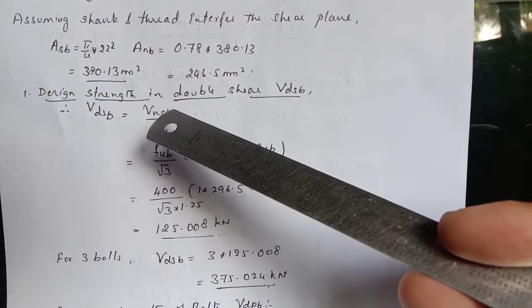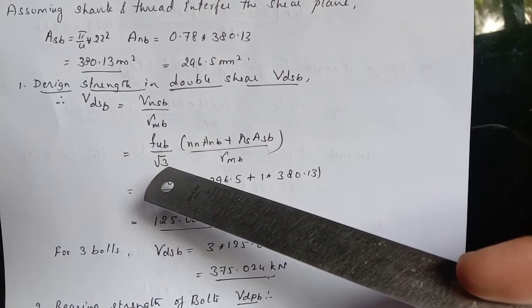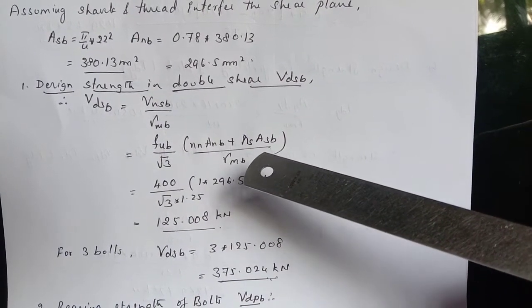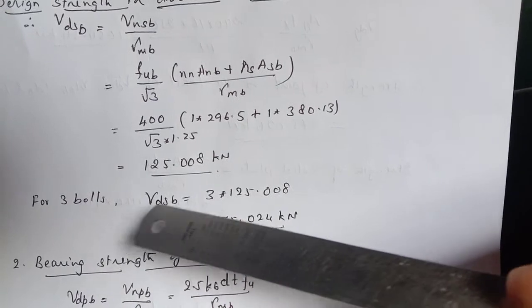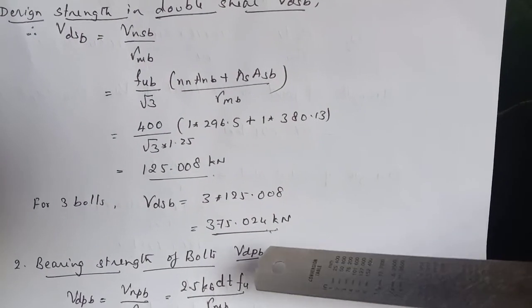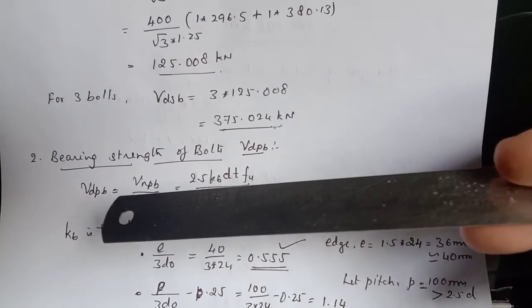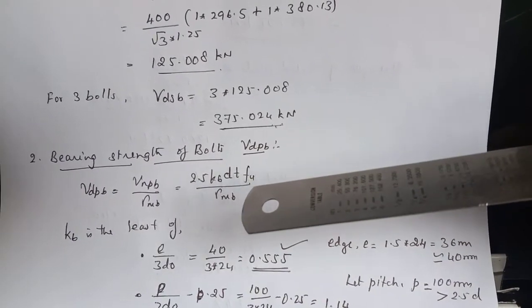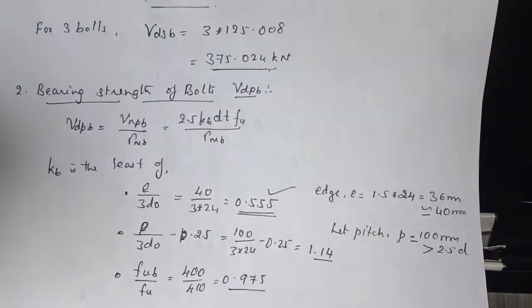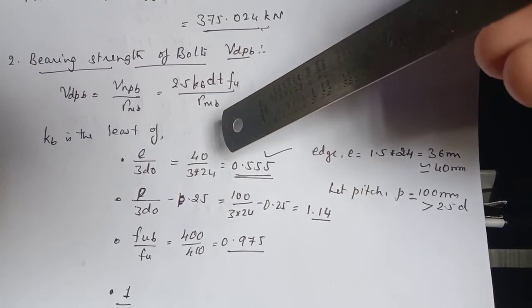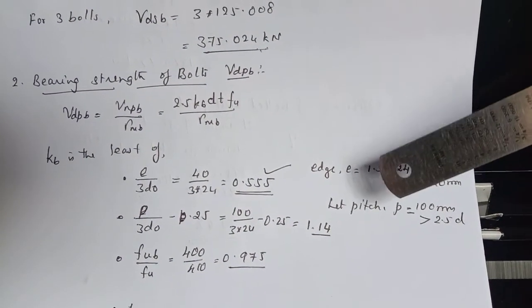Now the design strength of bolt in a double shear is given by VNSB by gamma MB. The formula is FUB by root 3 NNANB plus ANSASB divided by gamma MB upon substitution works out to be 125.008 kN. So for 3 bolts by considering one side we get 375.024 kN. Therefore we will also calculate bearing strength of bolt VDPB. So the bearing strength of the bolt is given by VNPB by gamma MB, 2.5 KB DT FU by gamma MB. We are aware of that particular formula. Now KB value is the least of the following for E by 3D0, P by 3D0 minus 0.25 FUB by FU and 1.